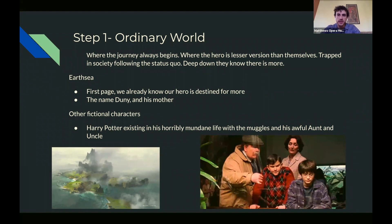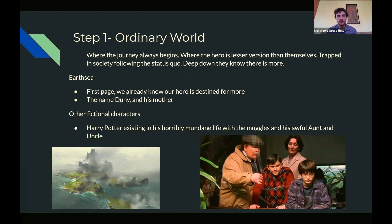For A Wizard of Earthsea, right off the bat we're told Ged is destined for more. The book opens with this young boy who eventually becomes a dragon lord or archmage—but he had to start somewhere. That was just as a little kid named Dunny, born on the island of Gont. When he's born, he doesn't have any abilities yet; his mother dies at his birth. He's this odd child living on the island with his father and brother. That's where this journey starts. The hero's journey always starts somewhere pretty mundane.